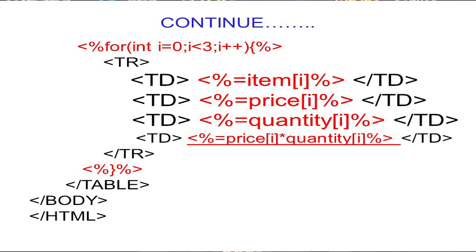The loop then moves to the third iteration where i=2, which is less than 3, so it runs again. It retrieves item[2], price[2], and quantity[2] — the Pen Drive values — and the fourth cell displays price[2] × quantity[2]. This completes the program, which displays all three array items in a table with their calculated totals.